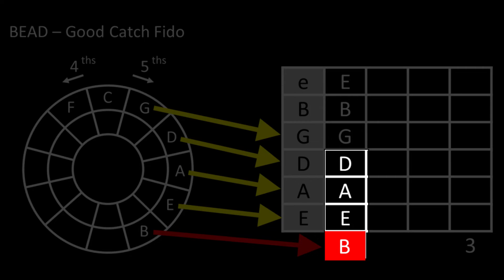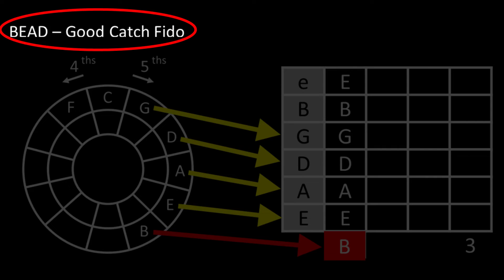I point this out because the B, E, A, D sequence is memorable since it spells a real word. To remember the whole sequence, start with the word BEAD, then remember G, C, F as Good Catch Fido.